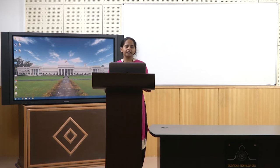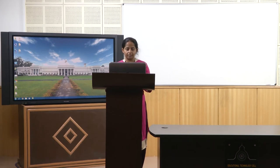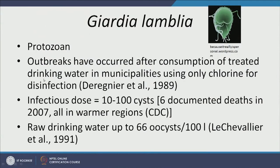Giardia and Cryptosporidium are really hard to detect using conventional microbiological techniques. Importantly, outbreaks have occurred after consumption of treated drinking water when only chlorine was used for disinfection. In India, chlorine is the major form of disinfection, but chlorine is not sufficient to kill Giardia and Cryptosporidium. Thus, these diseases are a major concern in India.